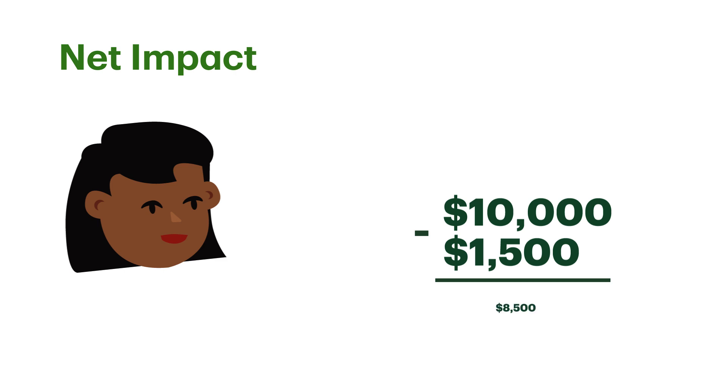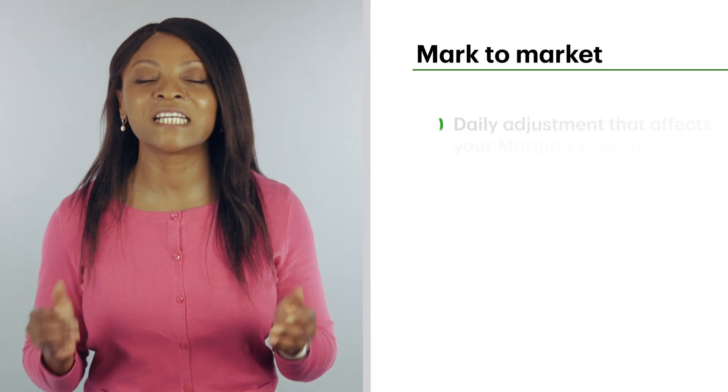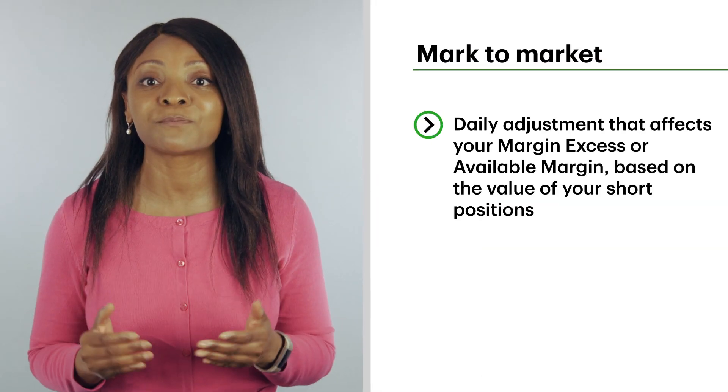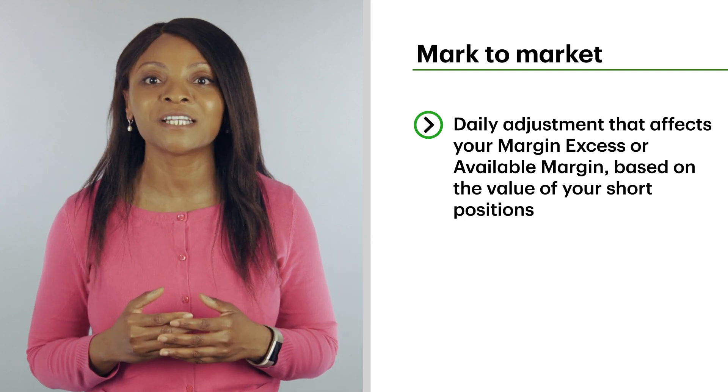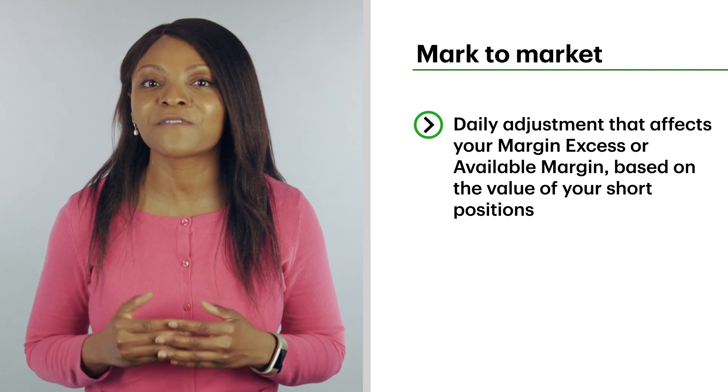Assuming you started with an available margin of ten thousand dollars, this means your remaining margin will now be eighty-five hundred dollars. Now let's see what happens to your margin if the stock price on your short position changes. To explain this, we're going to introduce a new term called mark to market. Mark to market is a daily adjustment that affects your margin excess or available margin based on the value of your short positions.